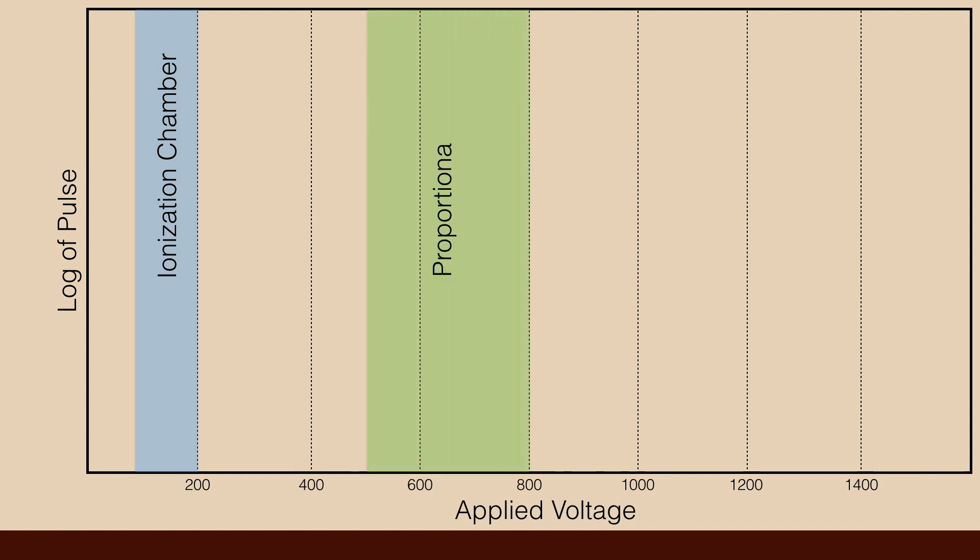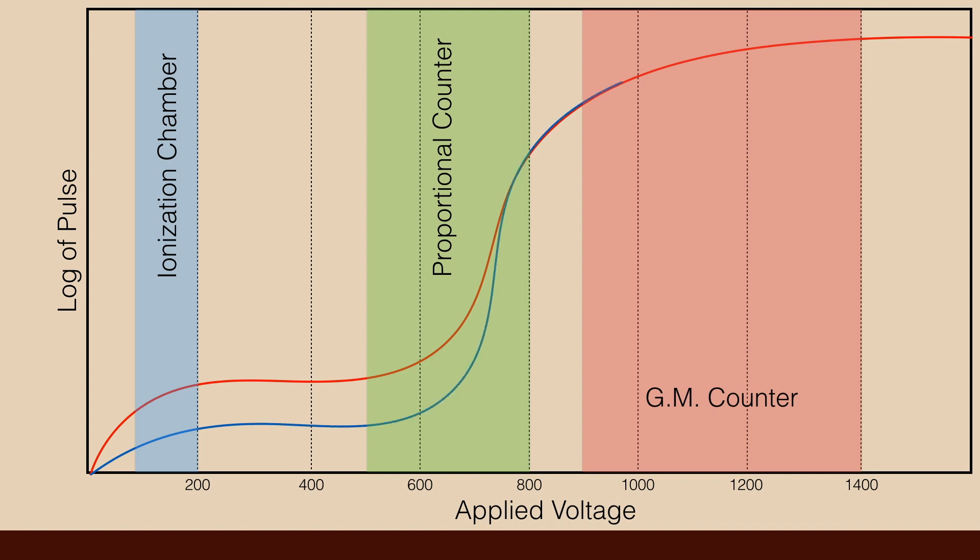The instrument working in the range of 200 to 900 volts is known as proportional counter. The device working in the potential range of 900 to 1400 volts is known as GM counter. If the applied potential exceeds 1400 volts, the gas starts glowing. If we plot a graph of log of ions or pulse of current versus potential applied, the upper curve is for alpha particles and lower is for beta rays.